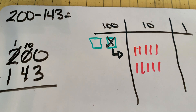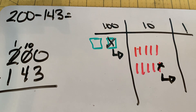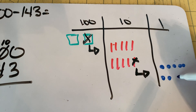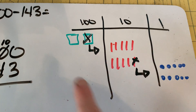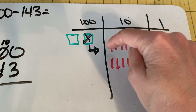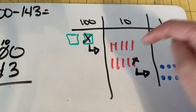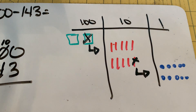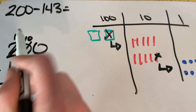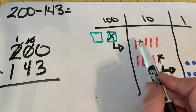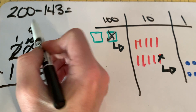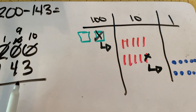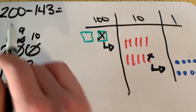So we're going to take one of these tens and turn it into some ones — and it's ten ones: one, two, three, four, five, six, seven, eight, nine, ten. We now have nine tens and instead of having zero ones, we now have ten ones. And we know that one hundred, nine tens, and ten ones is still the value of two hundred.